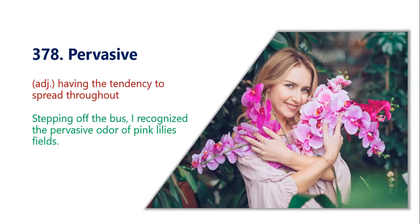Next word is pervasive, it means having the tendency to spread throughout — a tendency to spread easily. Stepping off the bus, I recognized the pervasive odor of pink lilies fields — when I got off the bus, I immediately found the smell of pink lilies because their smell has a tendency to spread. In the picture we can see a girl who has picked pink lilies and she looks very happy.